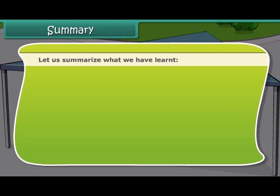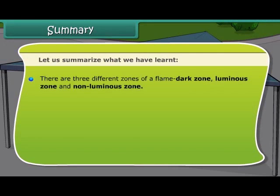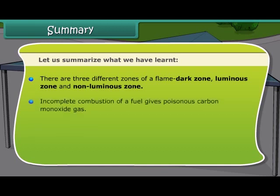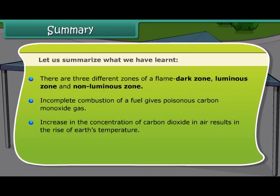Let us summarize what we have learned. There are three different zones of a flame: dark zone, luminous zone, and non-luminous zone. Incomplete combustion of a fuel gives poisonous carbon monoxide gas. An increase in the concentration of carbon dioxide in air results in the rise of Earth's temperature. Acid rain contains oxides of sulfur and nitrogen in dissolved state.